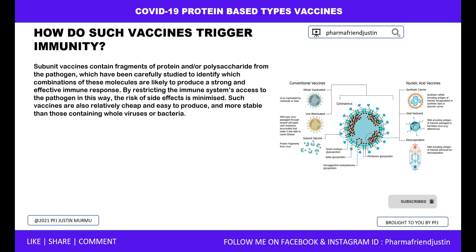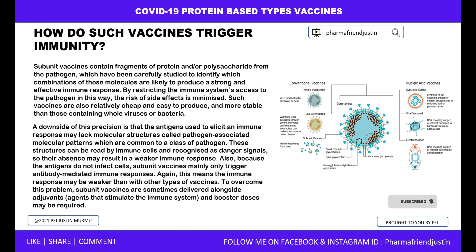How do such vaccines trigger immunity? Subunit vaccines contain fragments of protein and/or polysaccharides from the pathogen, which have been carefully studied to identify which combination of molecules is likely to produce a strong and effective immune response. By restricting the immune system's access to the pathogen in this way, the risk of side effects is minimized. Such vaccines are also relatively cheap and easy to produce, and more stable than those containing whole virus or bacteria. A downside is that the antigen used to elicit an immune response may lack molecular structures called pathogen-associated molecular patterns, which are common to a class of pathogens and can be read by immune cells as danger signals.